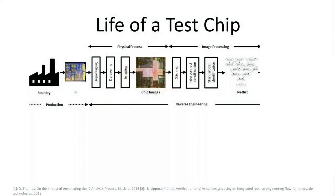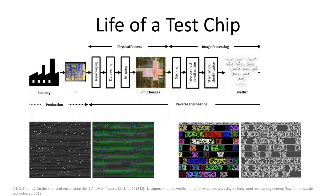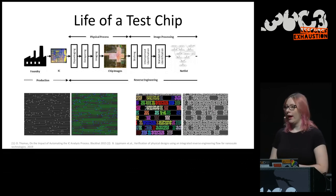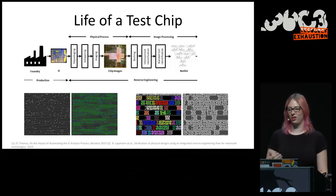Let's have a look at what the life of a test chip is like. We come out of the foundry, we have our lovely little chip, and we start depackaging it. We delayer, we image, we have to stitch all that — that's an image processing topic, and before that a physical processing topic. Eventually we have some kind of interconnect identification, where you start finding pictures and doing image processing to figure out exactly where the connections are, or some kind of standard cell identification — you have someone reverse engineer all 300 cells, then find them again with pattern matching across the remaining 2 million minus 300.